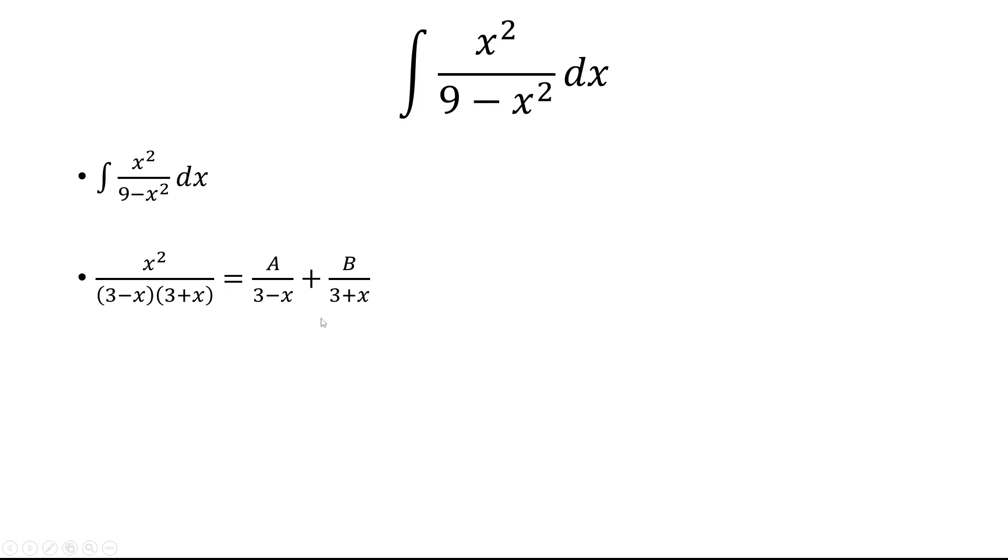Now multiply both sides by (3 - x)(3 + x). This gives us x² = A(3 + x) + B(3 - x).